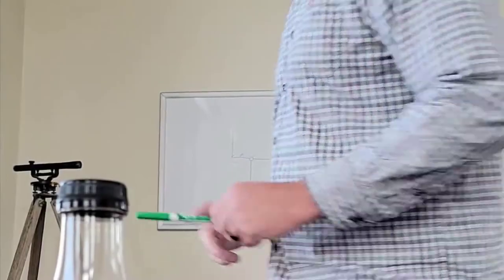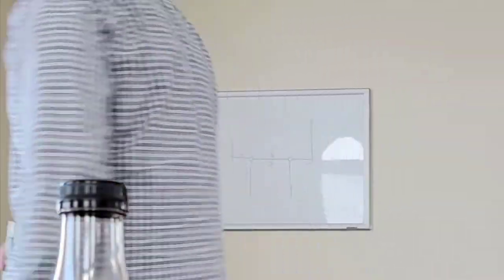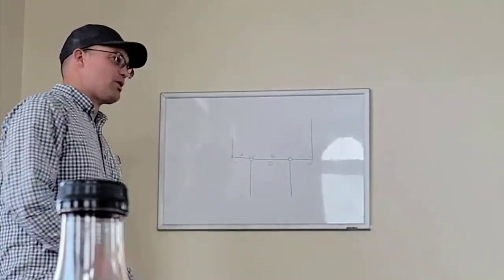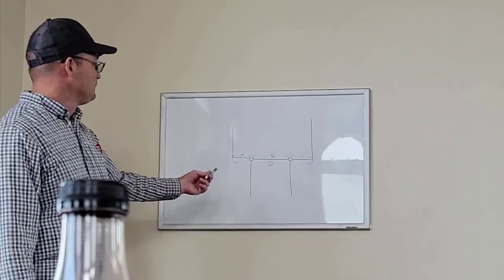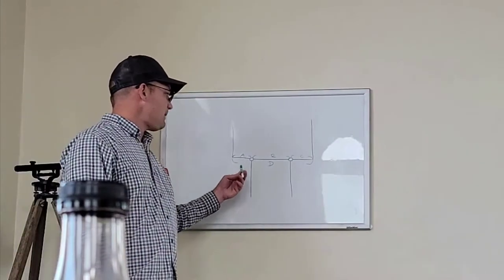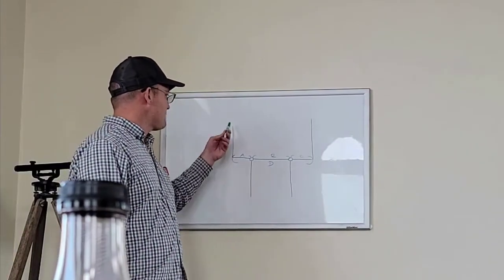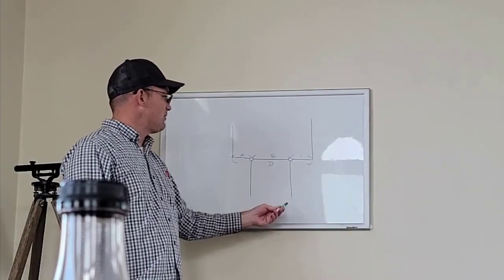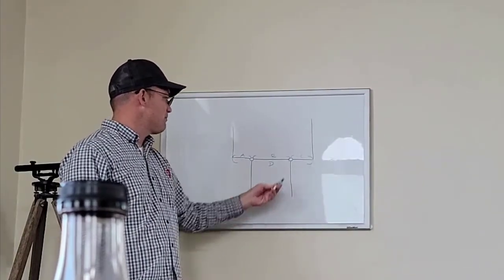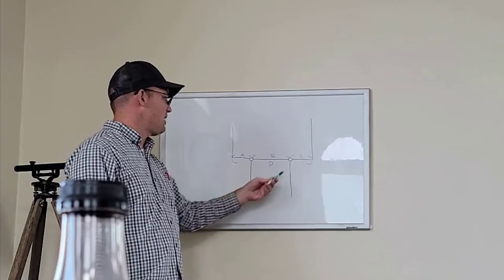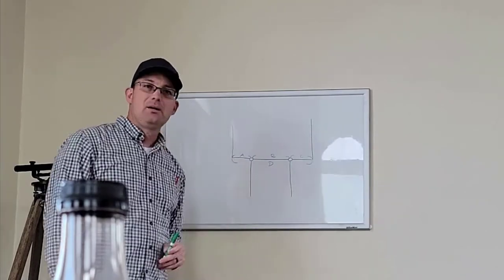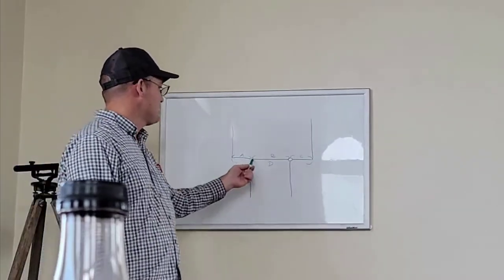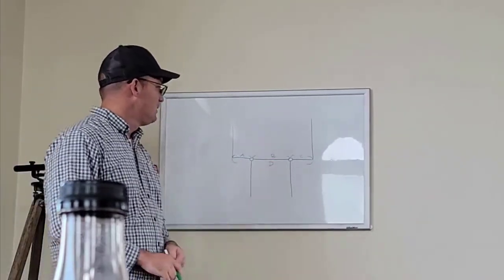On boundary survey maps, something that came up when Hunter and I were working today: let's say we've got a parcel with some parcel lines or tie lines coming in on the bottom, and there are a couple monuments here. As a general rule, we want to label all three of these A, B, and C.